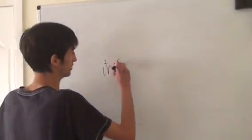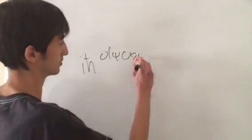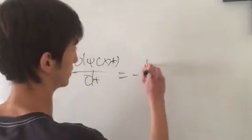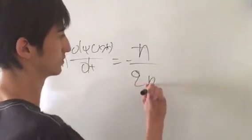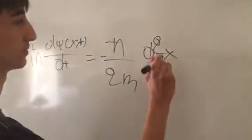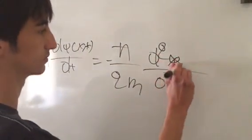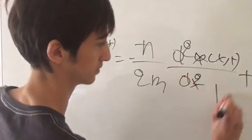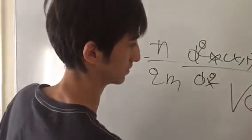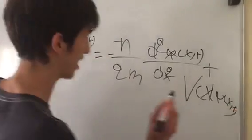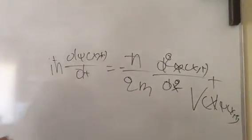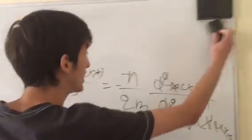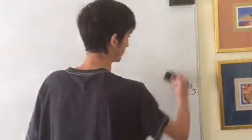First, the Schrödinger equation. And this shows the probabilistic way to find an electron, which will never be actually precise. Never, never, never.